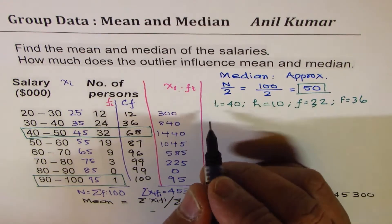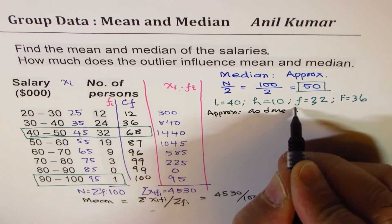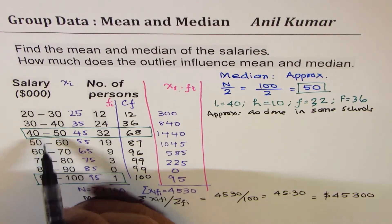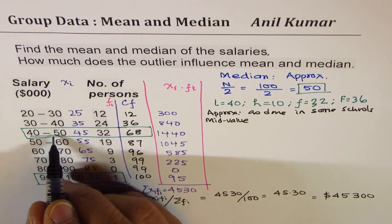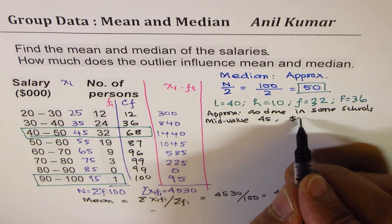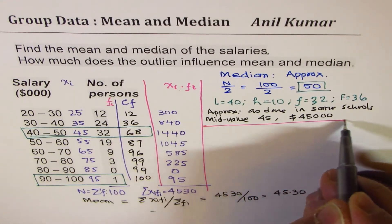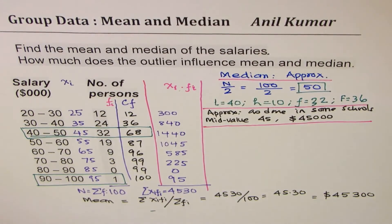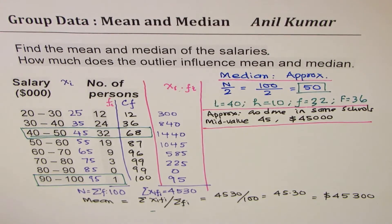Now we can use a formula and get the result. Before getting the formula, let me give you the approximate value as done in some schools. So what they do here is they just take the mid-value. So they will take the mid-value of this particular class of our interest. So between 40 and 50, it is 45. So they say 45 is the answer, and in dollars it will be $45,000. This is done in some schools, not all. But that is not a wrong answer, since median is always an approximation.